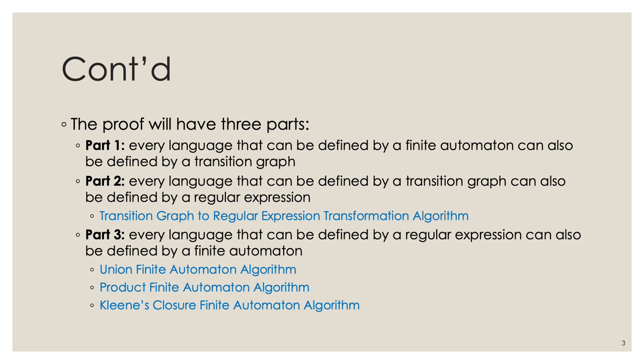The proof has three parts. Part one, which is kind of trivial, states that every language definable by a finite automata can also be defined by a transition graph. This is trivial because every finite automata is itself already a transition graph — it is just a special case. In a finite automata you have as many transitions as there are letters in the alphabet, while in a transition graph that requirement is relaxed, and edges can be labeled with substrings.